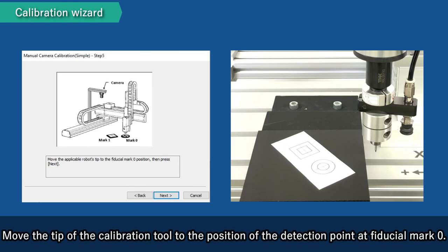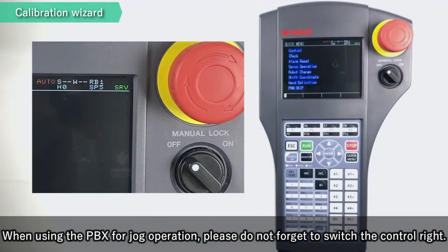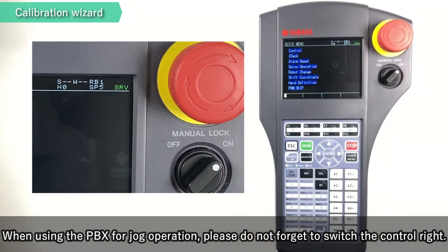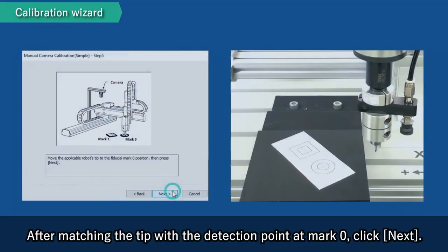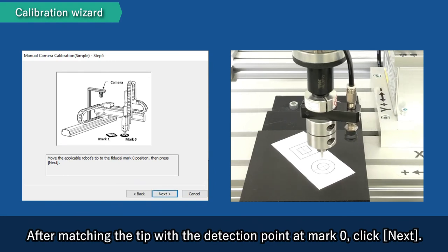Move the tip of the calibration tool to the position of the detection point at fiducial mark 0. When using the PBX for jog operation, please do not forget to switch the control right. After matching the tip with the detection point at mark 0, click Next.